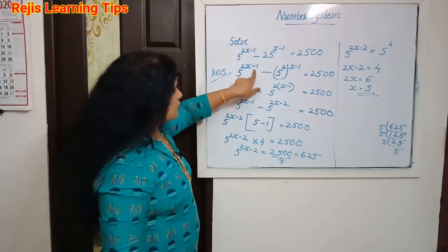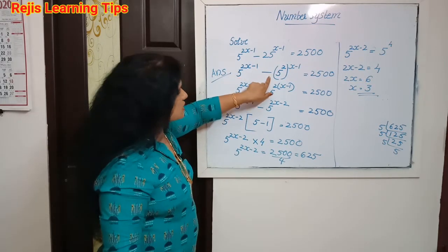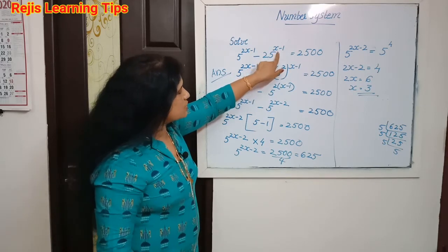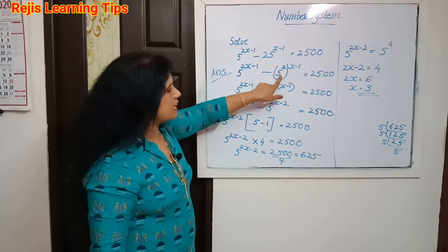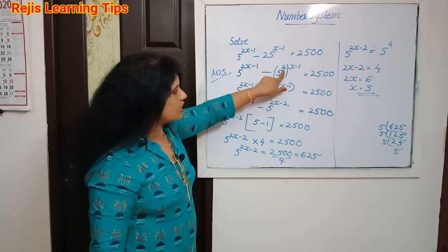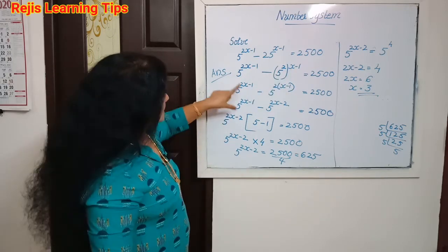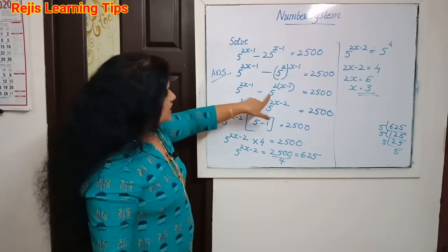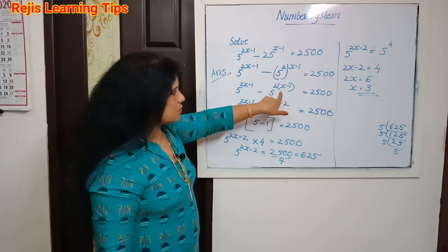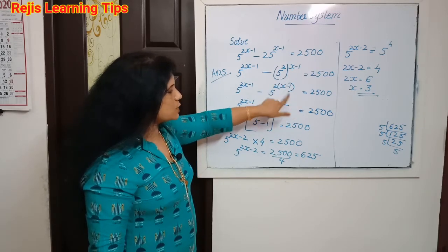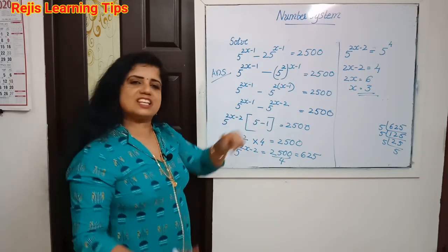25 raise to x minus 1 means 5 raise to 2 into x minus 1, that means 2x minus 2.